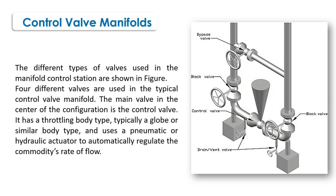The different types of valves used in the manifold control station are shown in the figure. Four different valves are used in the typical control valve manifold. The main valve in the center of the configuration is the control valve. It has a throttling body type, typically a globe or similar body type, and uses an automatic or hydraulic actuator to automatically regulate the commodity's rate of flow.